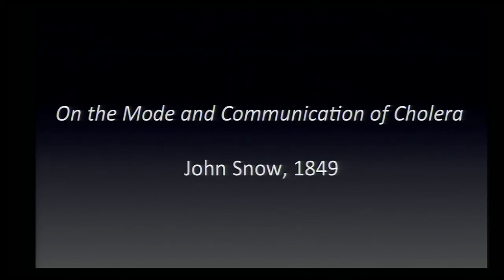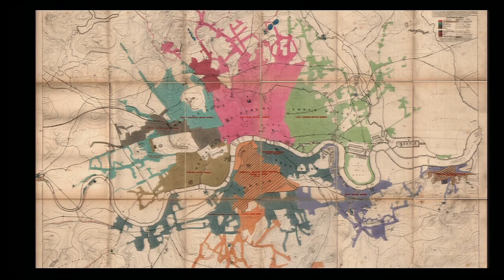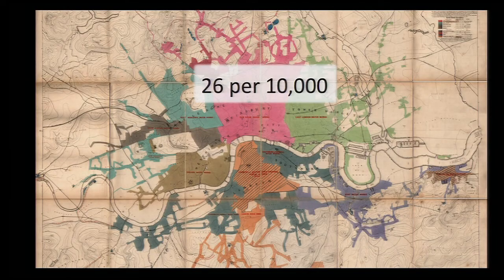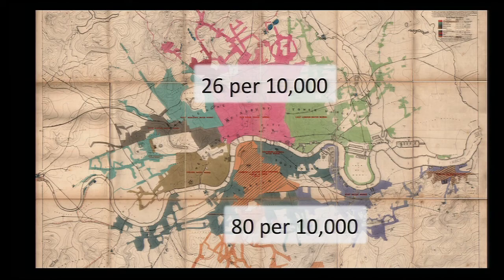That publication contained what may be the first large-scale epidemiological study ever undertaken. Here's a map of London — you can see the Thames River snaking through the middle. Each colored region shows the area served by a given waterworks. His argument was that people living north of the Thames had their water piped in from relatively distant sources, but if you lived south of the city, your waterworks drew from the Thames at London Bridge — right where raw sewage by the ton was being dumped into the river. He found that if you lived north of the river, your chance of dying from cholera was about 26 in 10,000, but if you lived south, your risk went up to 80 in 10,000.